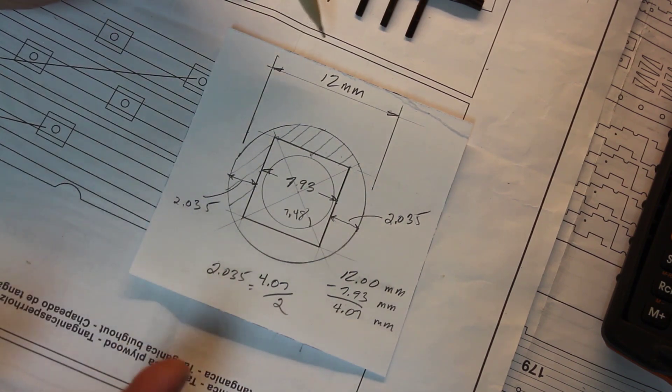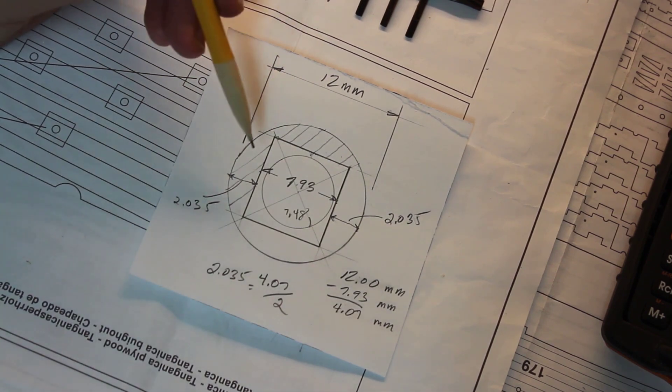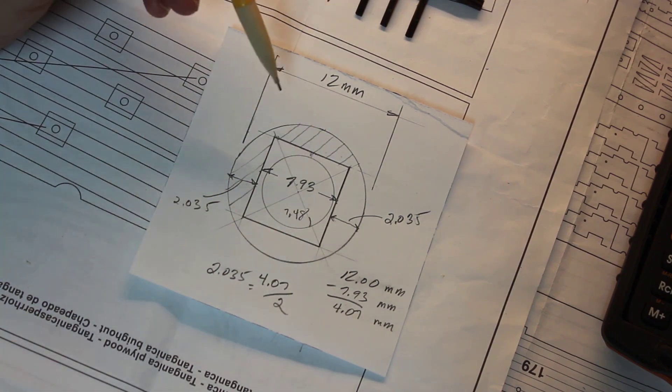Basically, in order to do a calculation, I just want to get a rough estimate. So we have 12 millimeters, and the dimension of the flat from flat to flat is 7.93 millimeters.